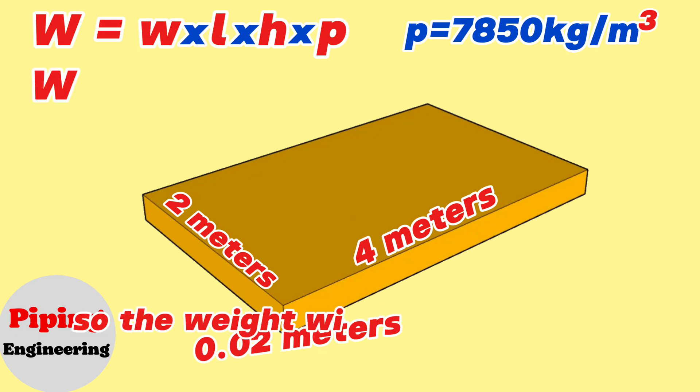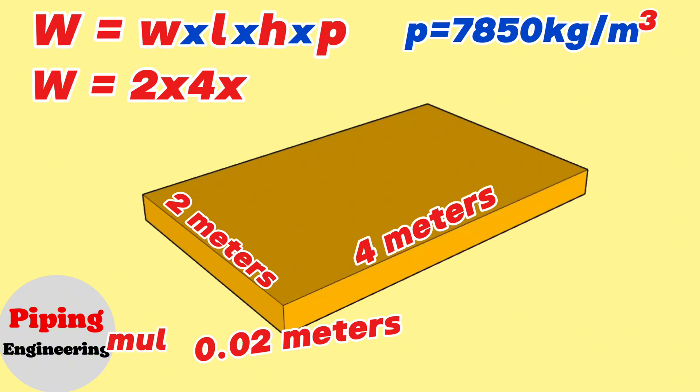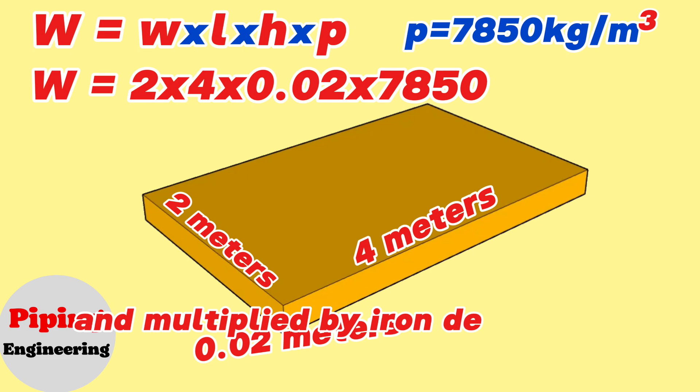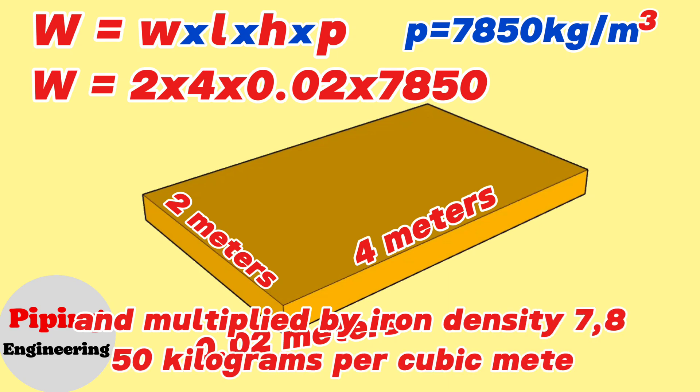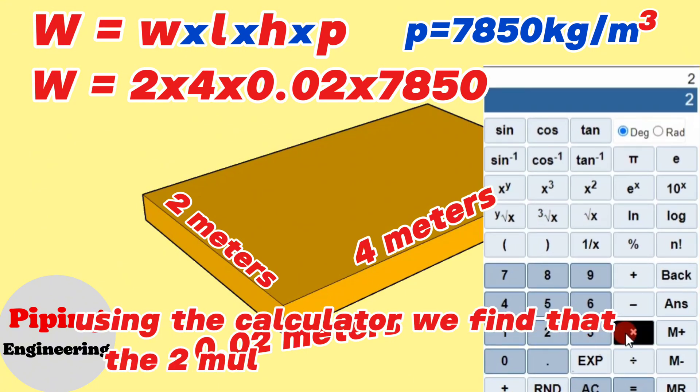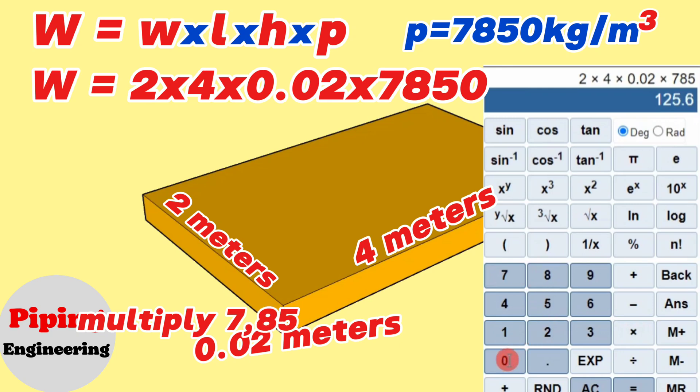So the weight will be equals width 2 meters multiplied by length 4 meters, multiplied by height 0.02 meters, and multiplied by iron density 7850 kg per cubic meter. Using the calculator, we find that 2 multiply 4 multiply 0.02 multiply 7850 will be equals 1256.